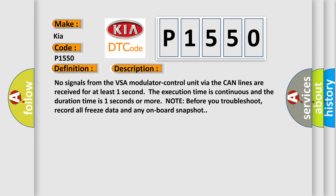No signals from the VSA modulator control unit via the CAN lines are received for at least one second. The execution time is continuous and the duration time is one second or more. Note: Before you troubleshoot, record all freeze data and any onboard snapshot.